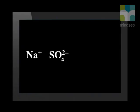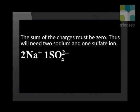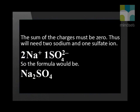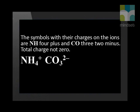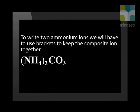We will look at sodium sulphate. We start by writing down the symbols Na⁺ and SO₄²⁻. The sum of the charges must be 0. To do this, we need 2 sodium and 1 sulphate ion, so the formula would be Na₂SO₄. Let's look at an example of a formula containing 2 composite ions: ammonium carbonate. The symbols with their charges are NH₄⁺ and CO₃²⁻. The total charge of these ions is not 0. We need 2 ammonium ions and 1 carbonate ion to make the total charge 0. To write 2 ammonium ions, we use brackets to keep the composite ion together: (NH₄)₂CO₃.